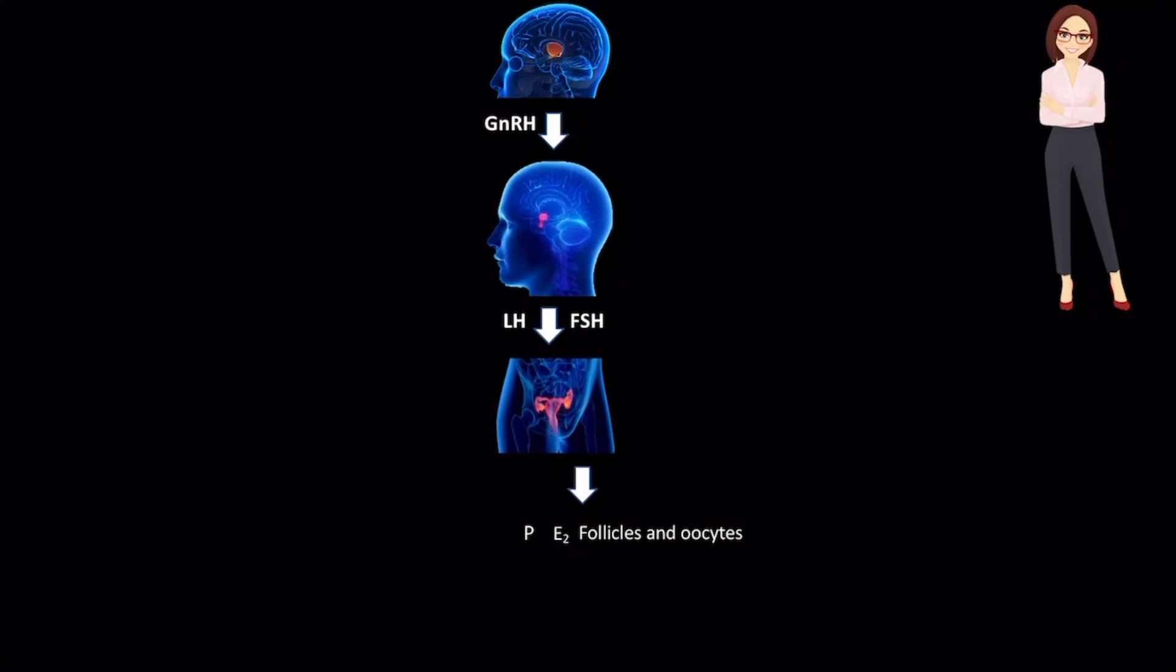In females, the feedback mechanisms are perhaps a bit more complicated. Early on in the monthly reproductive cycle, high levels of estradiol and the development of a follicle and oocyte, which triggers the release of inhibin, act on the hypothalamus and anterior pituitary gland to decrease the secretion of GnRH, LH, and FSH. This is all to prevent the development of extra oocytes and follicles.